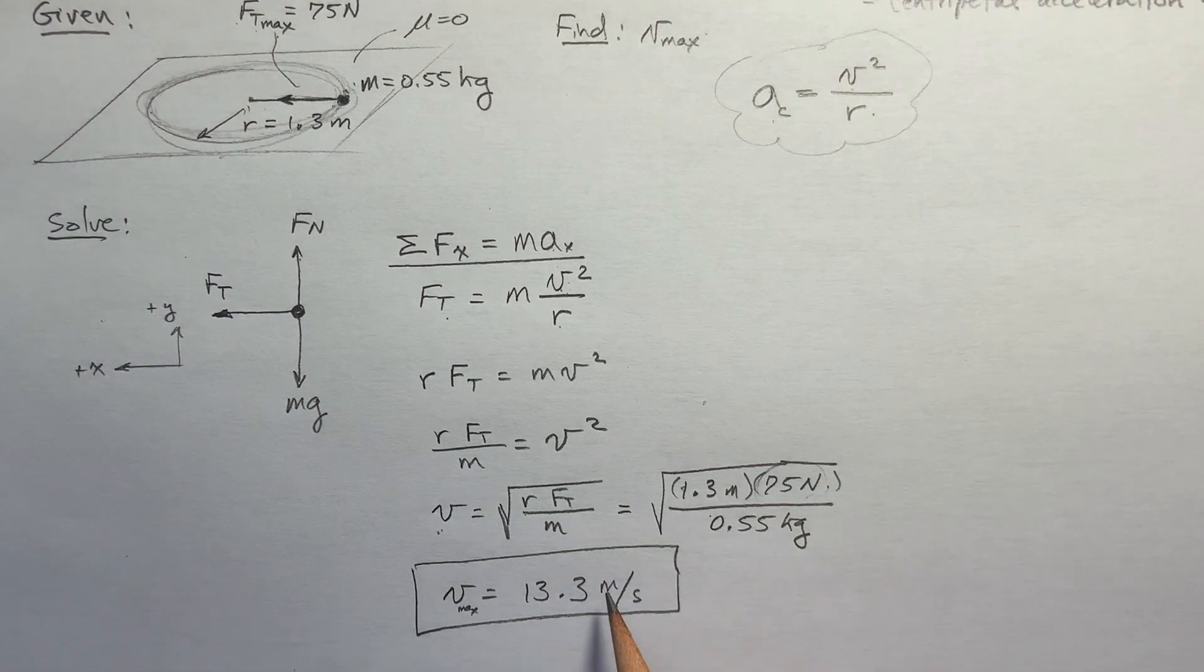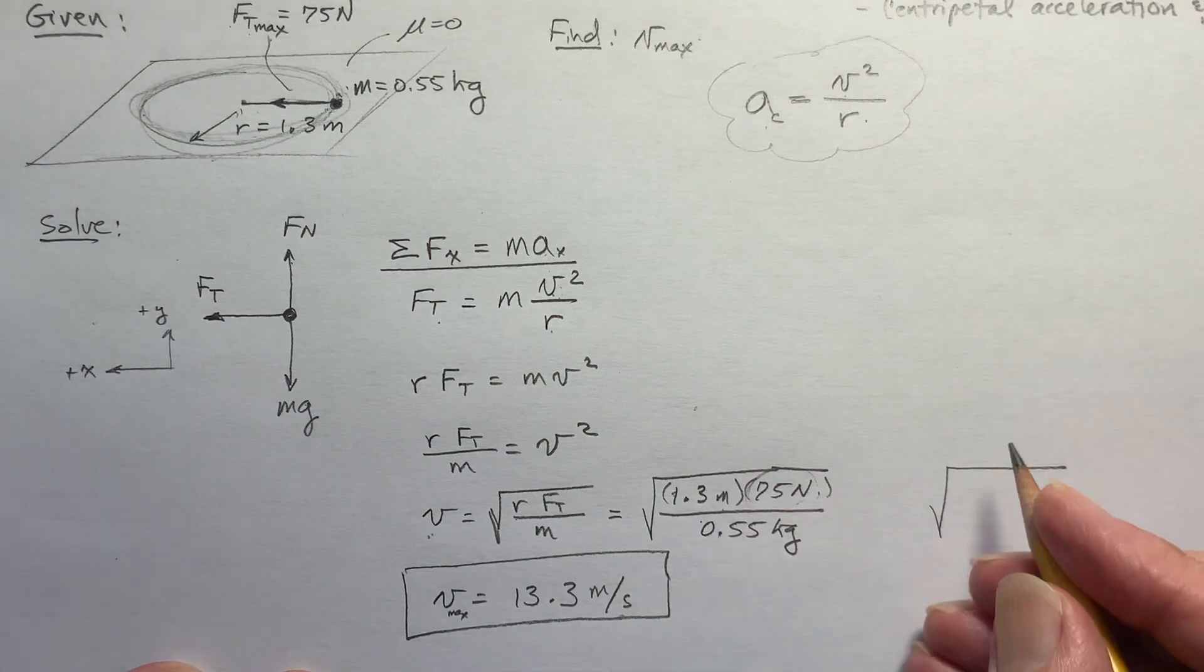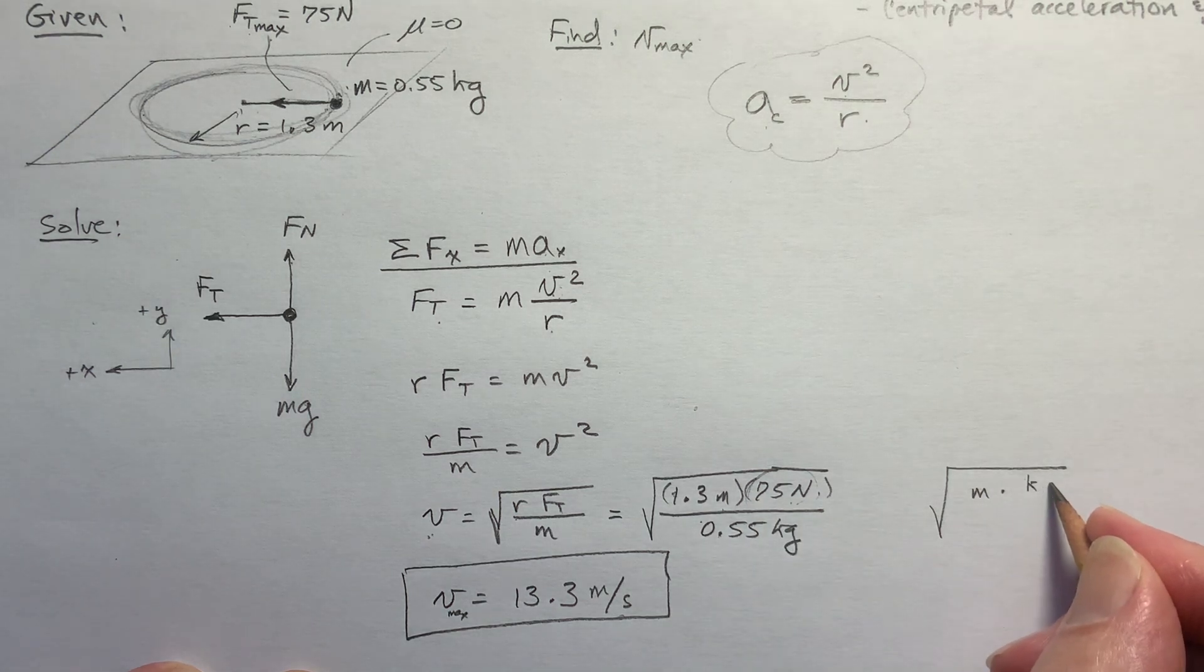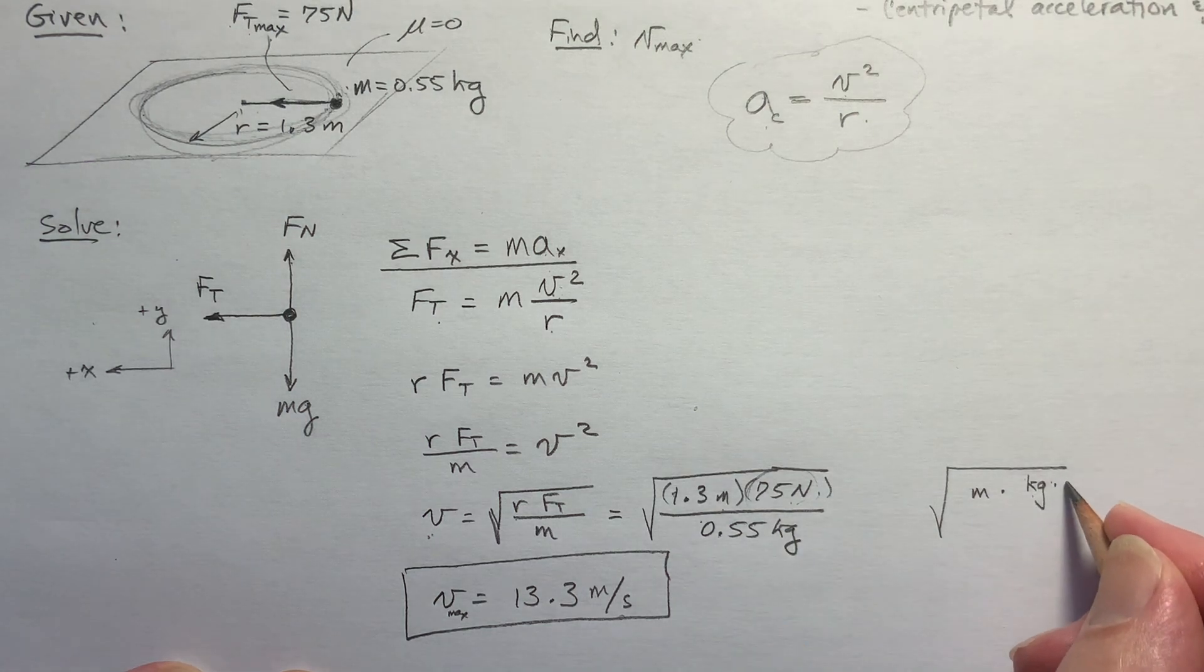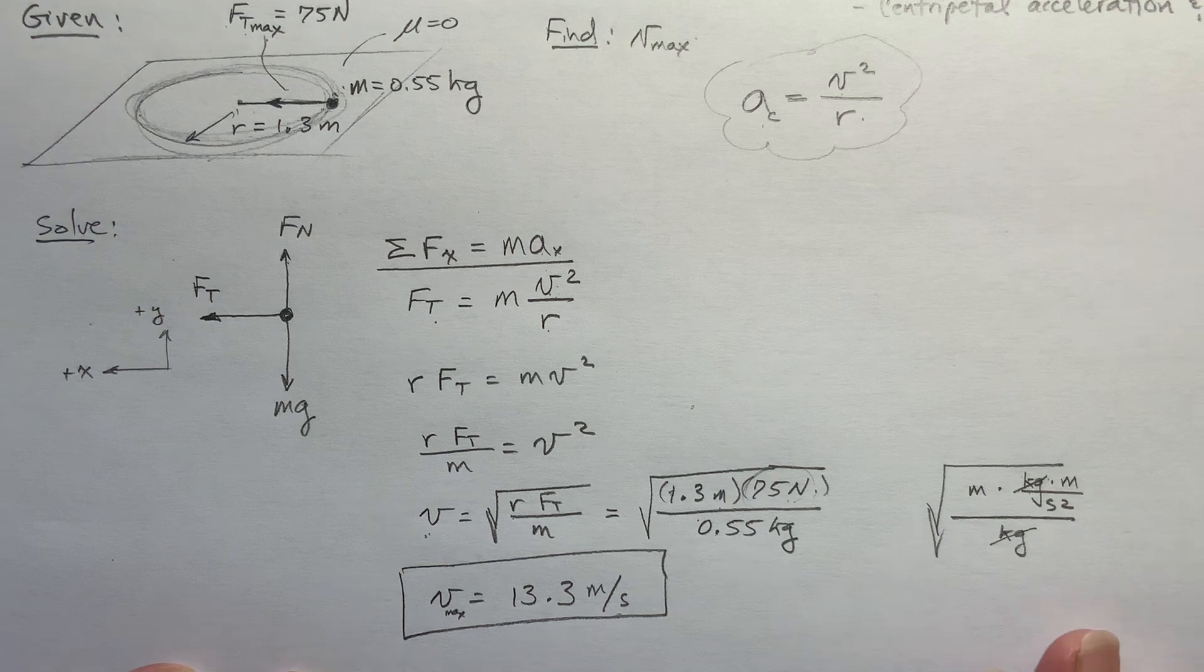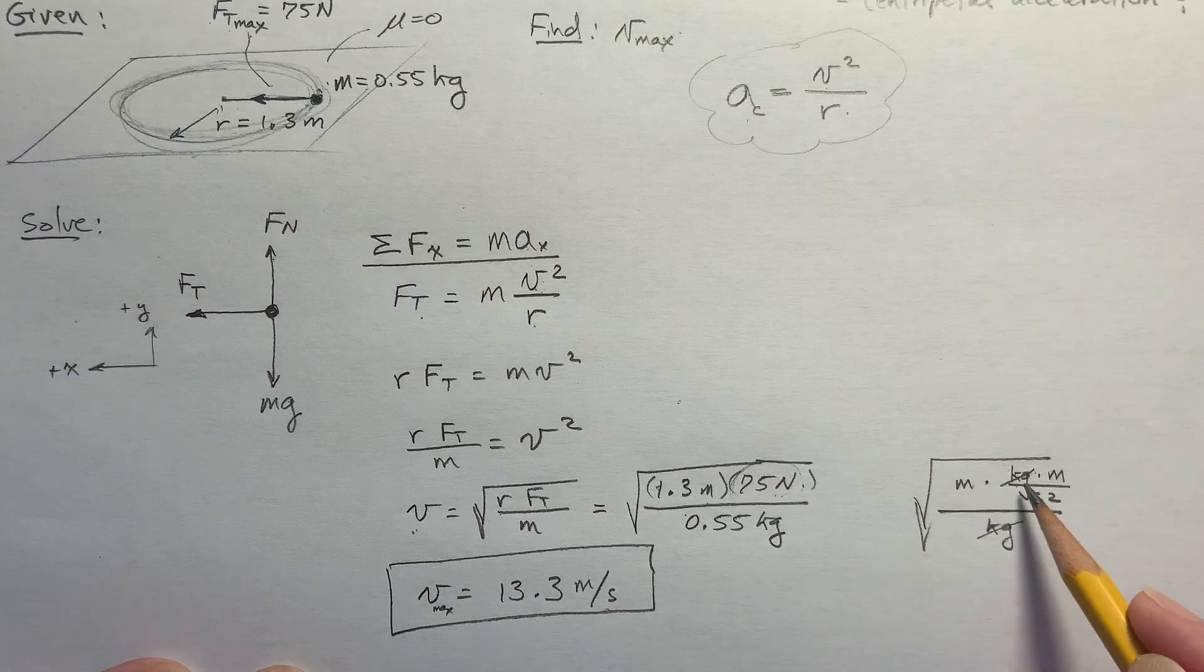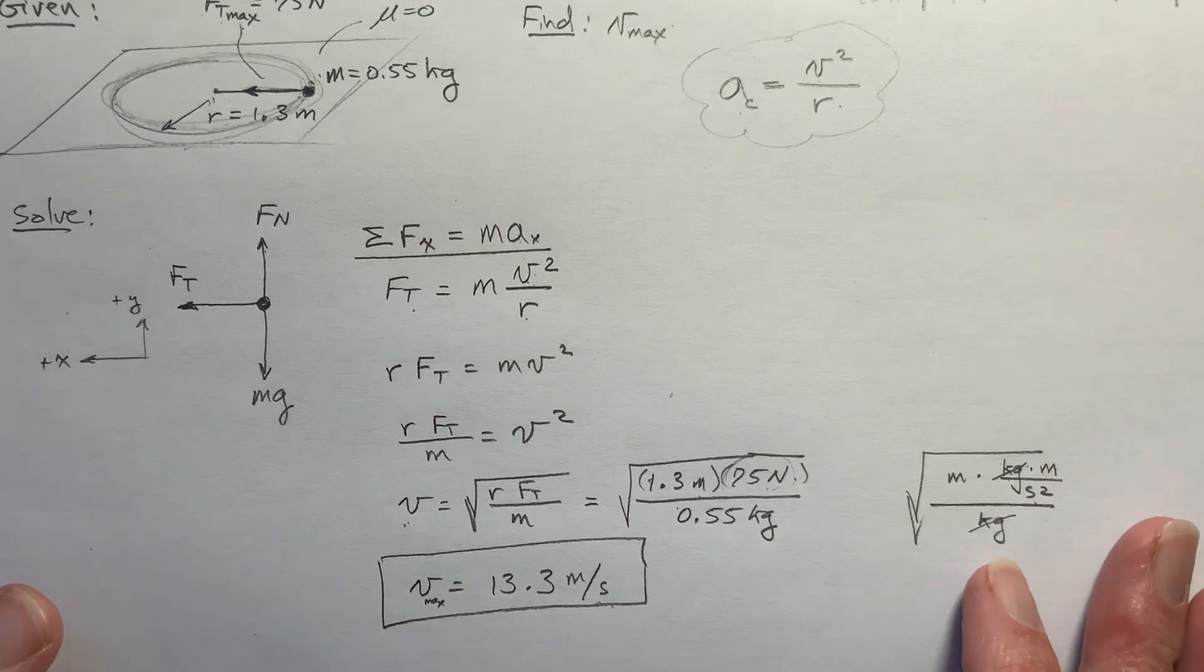Let's check units just for fun. Do I get meters per second with these units? Well we're having the square root of meters times a newton. Now what is a newton? It's mass times, mass is kilogram. Remember force is mass times acceleration. Kilogram. And then acceleration is meters per second squared. Divide that by kilograms. This is all under that radical there. And so notice that the kilogram cancels the kilogram. Meter times meter is meter squared. So I've got the square root of meters squared per second squared, which is meters per second. Yes. All right. The units work. So it must be right.